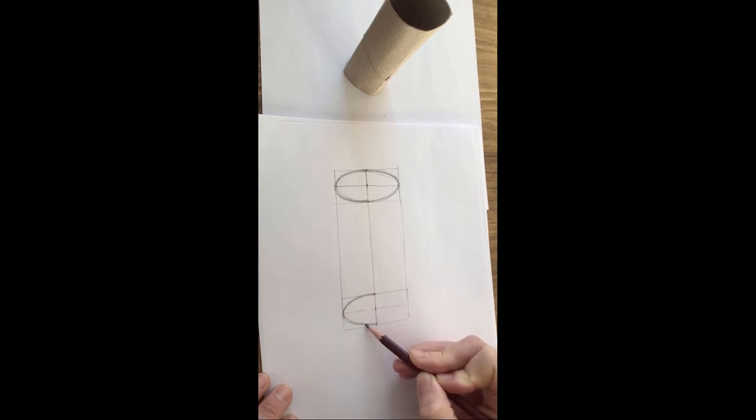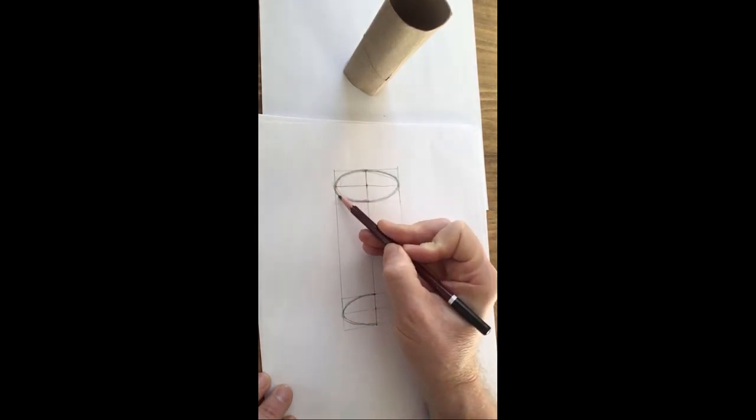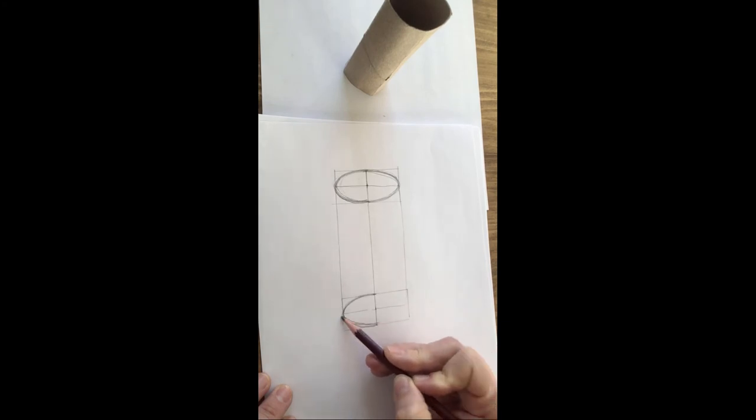So at the top ellipse, that curve there should be the same as that curve there.